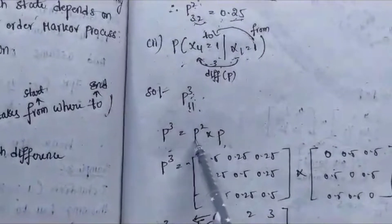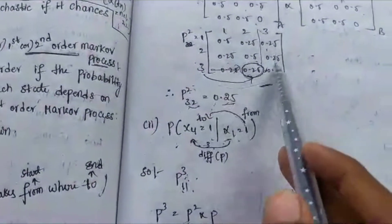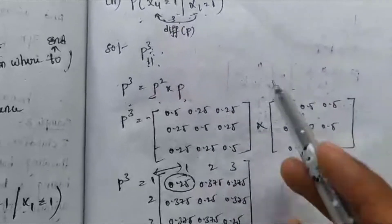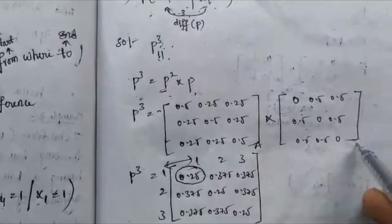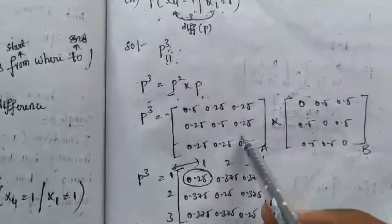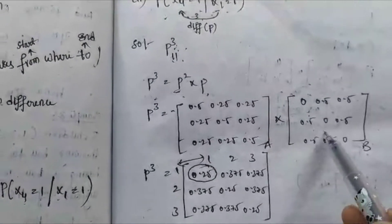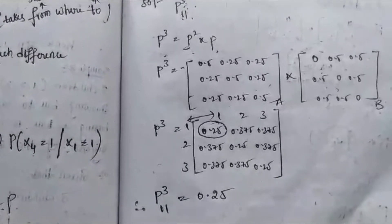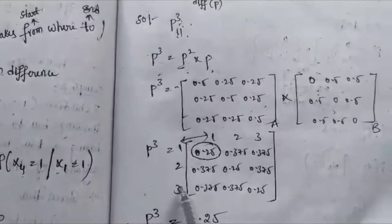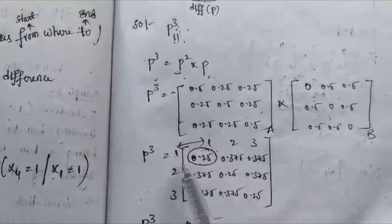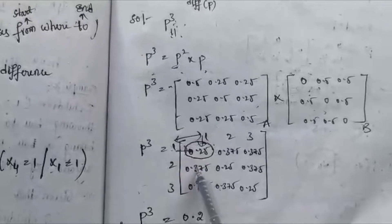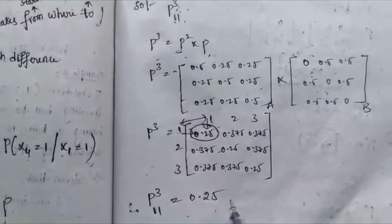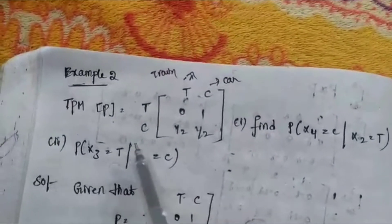P cubed equals P squared × P. We already know P squared and we know P. Taking P squared as matrix A and P as matrix B, we substitute into the calculator and get the P cubed matrix. The value at position 1 to 1 in the P cubed matrix is 0.25. Therefore P³(1→1) = 0.25.